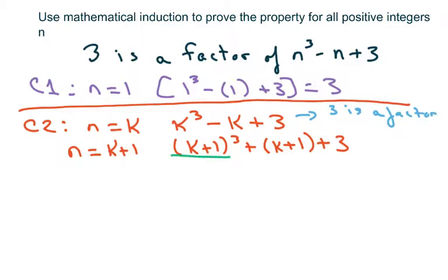Now, when you foil this out, I'm just using Pascal's Triangle or the Binomial Theorem. And this is just going to be k cubed plus 3 k squared plus 3 k plus 1. You should kind of have this one memorized so you don't have to keep foiling all that out. And then we just have minus k plus 1, and then we have plus 3.